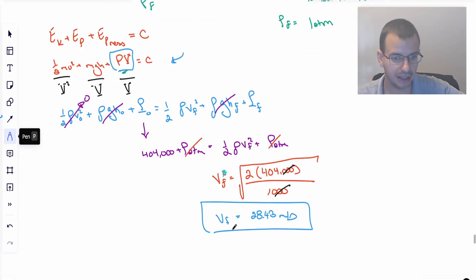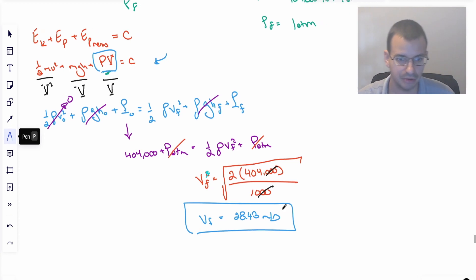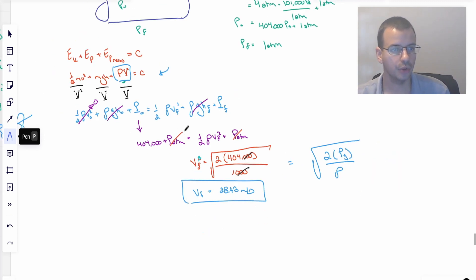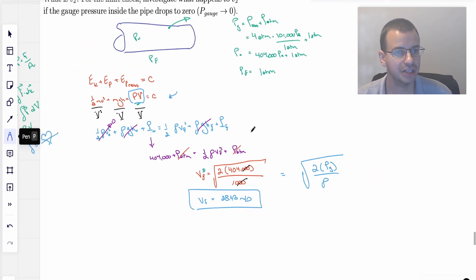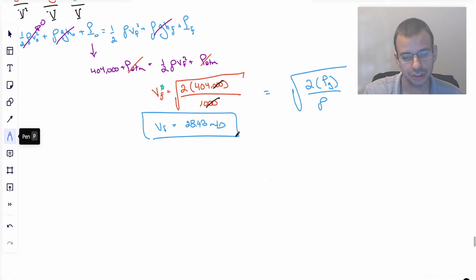I'm going to write this in terms of symbols. So that's two times pressure gauge over density of water. And so we want to find the limit. The pressure gauge goes to zero. So the limit as pressure gauge goes to zero of the square root of two pressure gauge over rho.